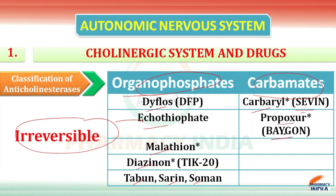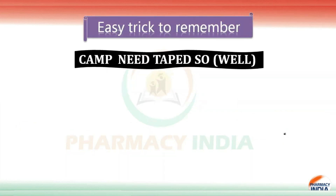Now these are the drugs of the cholinergic system. Let's look at a trick — how to learn these drugs with a mnemonic. The trick is: CAMP NEED TAPED. It is very easy — just remember CAMP NEED TAPED.